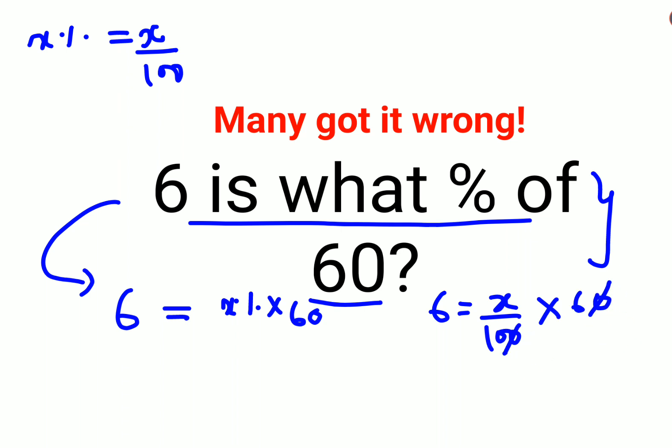So this and this gets cancelled. In order to find the value of x, we will multiply both sides by 10 and divide both sides by 6. So this also gets cancelled. Now I am just left with the value of x, which is 10.